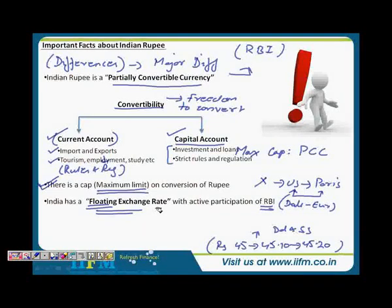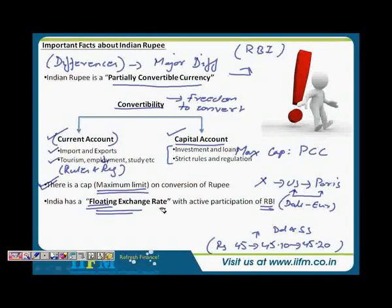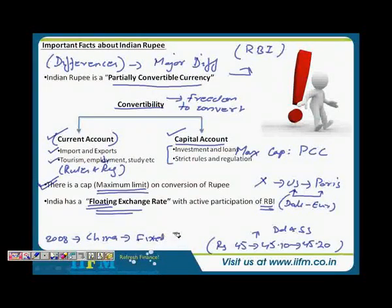Comparing this with a fixed exchange rate — wherein the rupee might be pegged to a certain specific amount — for example, if on one fine day the RBI says it adopts a fixed exchange rate where one dollar equals 45 rupees, then irrespective of what happens in the market you must exchange at 45. That would be a fixed exchange rate system. For a better perspective, during the 2008 financial crisis China had pegged its currency — the Yuan was pegged — which meant it was a fixed exchange rate. But now China has liberalized it and maintains a floating exchange rate system.